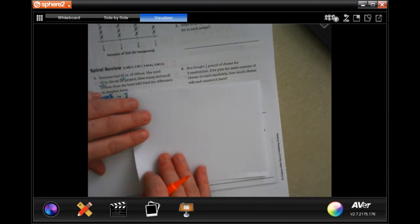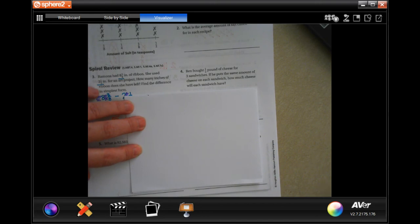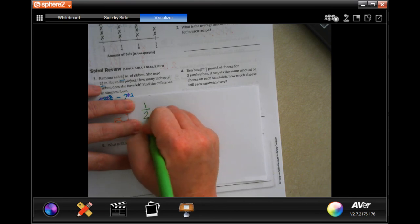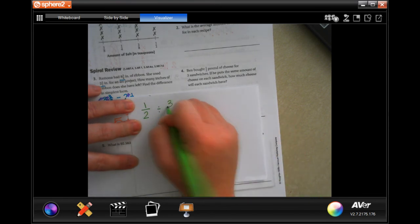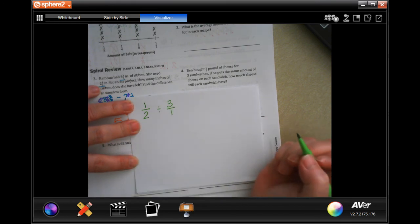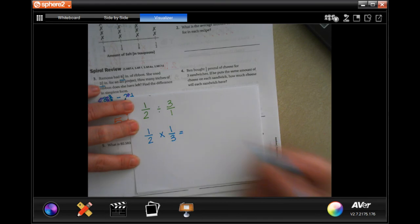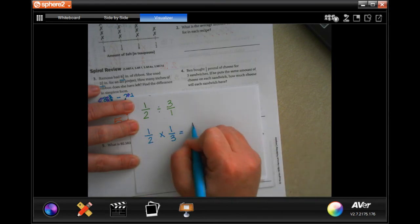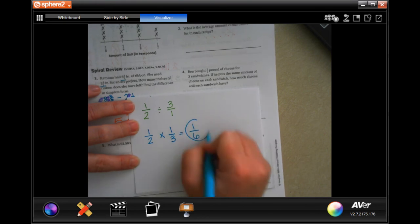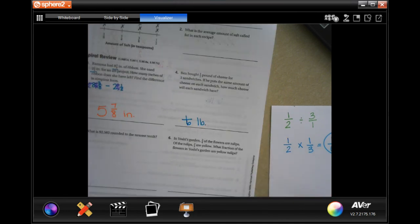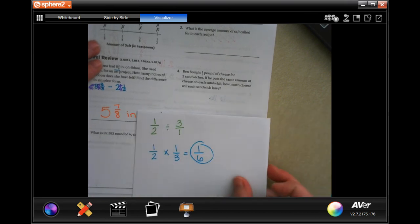Number four says, Ben bought a half pound of cheese for three sandwiches. If you put the same amount of cheese on each sandwich, how much cheese will each sandwich have? One half pound and he is dividing that by three. I'm going to put that three over a one because it's still equal to three. When we are dividing fractions, we keep, we change, and we flip. Now, one times one is one, and two times three is six. One sixth of a pound. Make sure that you show your work.